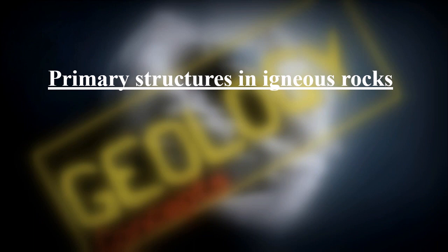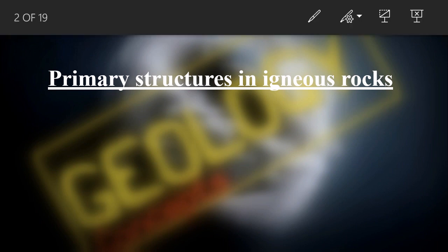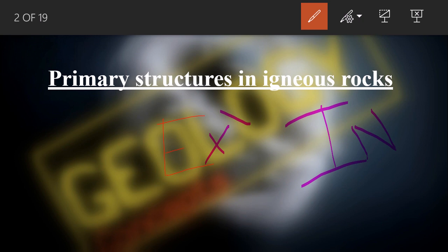In igneous rocks, first we need to understand that there are two types: extrusive igneous rocks and intrusive igneous rocks. Extrusive igneous rocks are formed from lava on the surface of the earth and cooled under air and water conditions. This also includes ash from volcanic explosive extrusions.